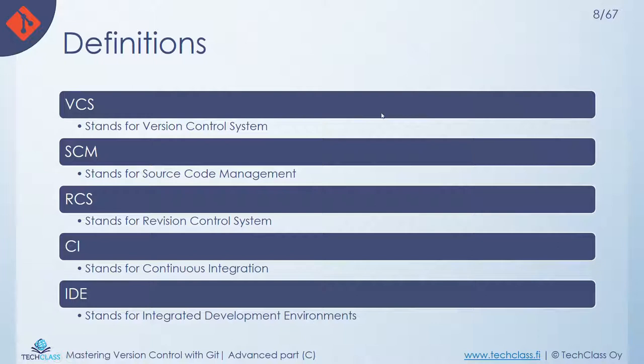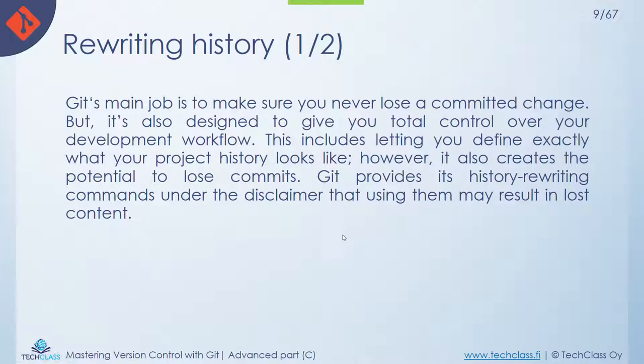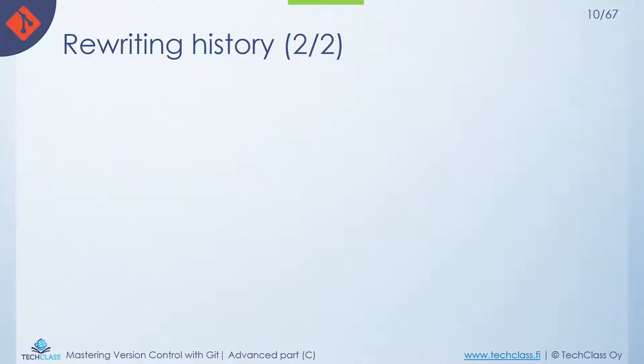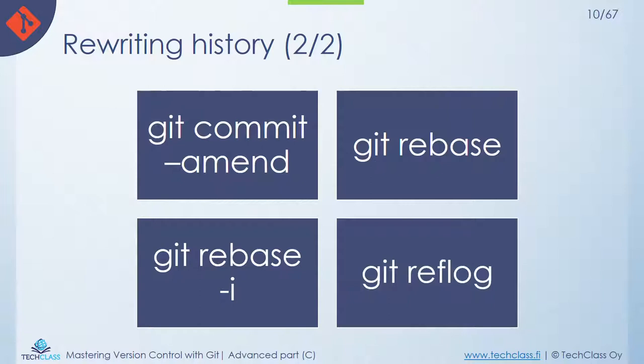Here are the definitions you may encounter throughout the material — make sure to understand them. Now let's get familiar with what we call rewriting history. An important concept in Git is making sure that nothing is lost along the way, especially with commits sent to branches. But it also gives flexibility to manage the workflow and modify things that happened beforehand. We have three commands with options to explore.